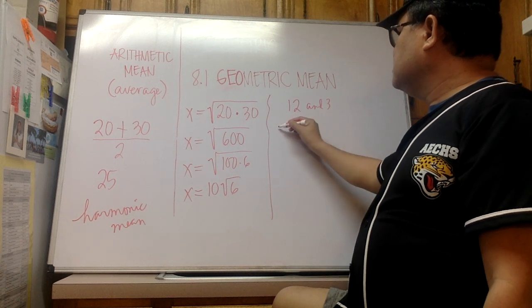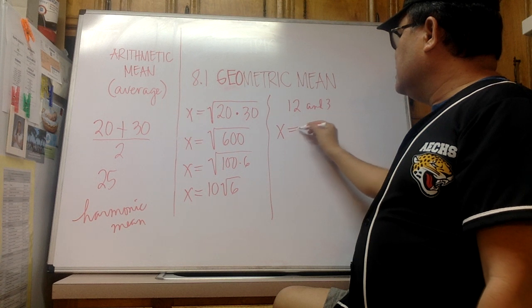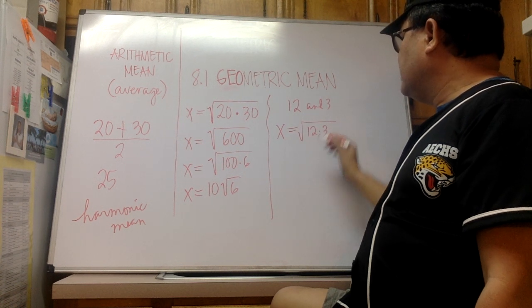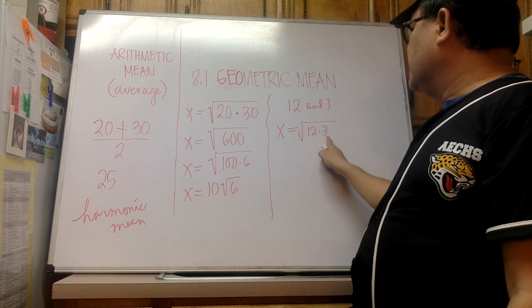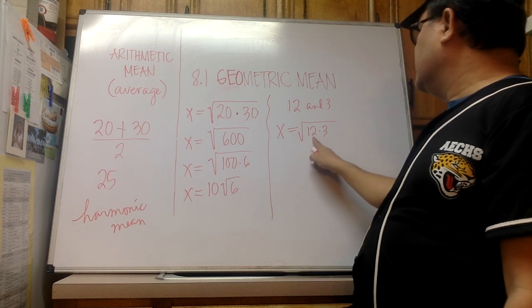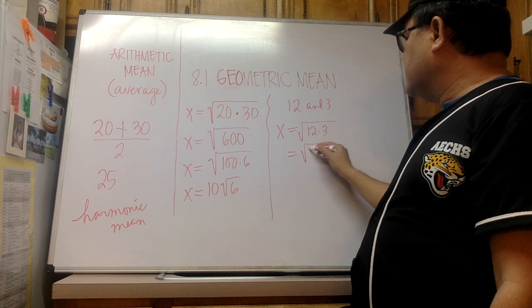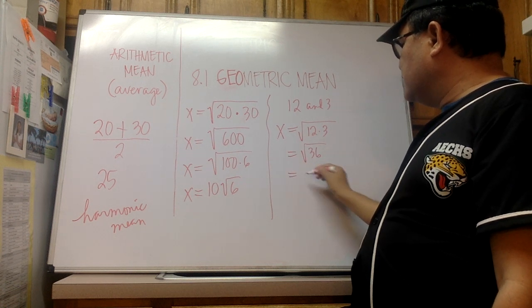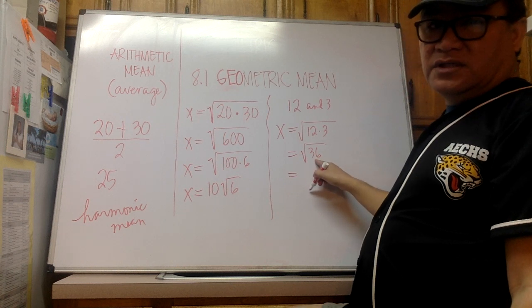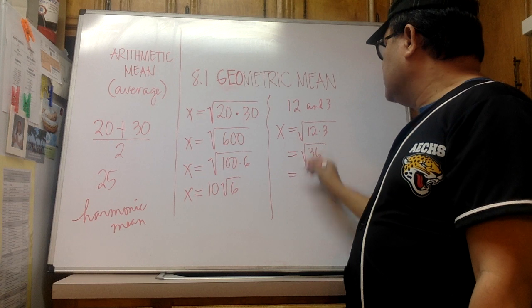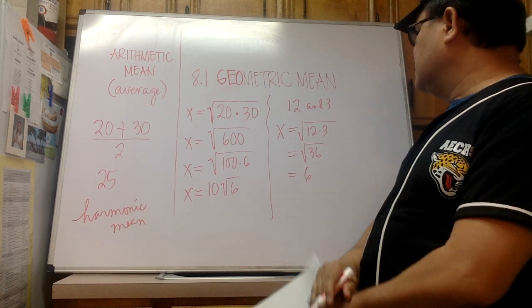So solution: x = the square root of 12 times 3. So we multiply the two numbers we were given and then take the square root of that. 12 times 3 is equal to 36, so we have square root of 36, and square root of 36 happens to be a constant.